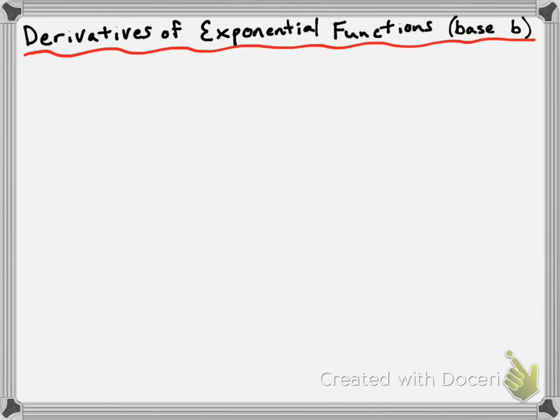Now in the video where we came up with Euler's constant, we came up with it using essentially a method where we attempted to take the derivative of an exponential function with a base of b from first principles, and we weren't able to complete it. But we were able to notice that the derivative of an exponential function with a base of b was equal to itself multiplied by some constant. The thought process was: what value of the base would allow that constant to equal 1? And that's actually how we came up with Euler's constant e. But that's kind of where we left things off.